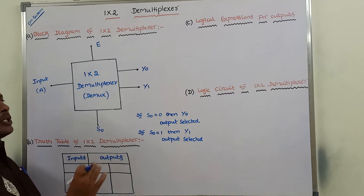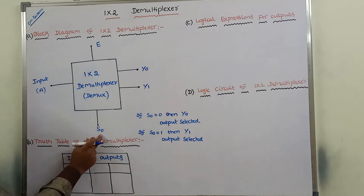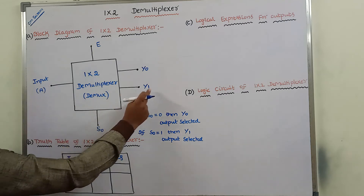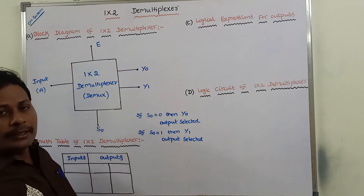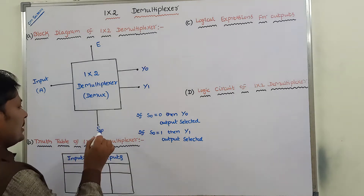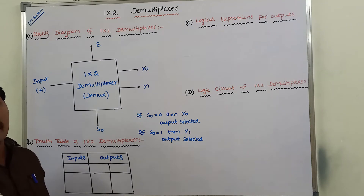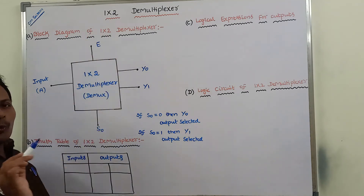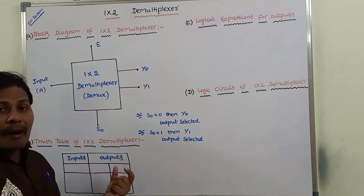In summary, input line A is connected to one of the two outputs, Y0 or Y1, based on the selection input value S0. Which output is selected is controlled by the selection line S0, so it can be called a controlled input. This entire operation is performed when the enable input E is equal to 1. If E equals 1, the demultiplexer performs its operation.